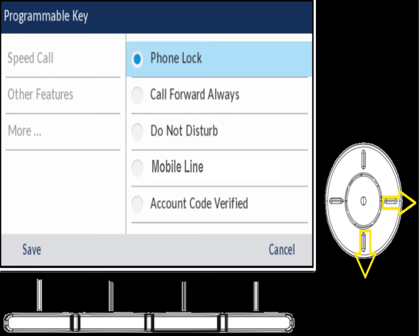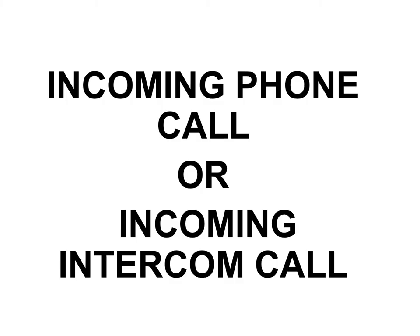Under Other Features, one option is a Mobile Line. If you have a 6930 or 6940 phone, that's how you set up a key to answer your cell phone calls when you're within Bluetooth distance. Most of the other features there — like call forward or phone lock — you're probably not going to use. This mobile line feature is only available on the 6930 and 6940 sets. Everyone with a 6920 can still have their desk phone ring their cell phone, but not the reverse.